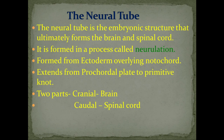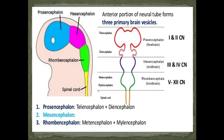The next topic is the neural tube. The neural tube is the embryonic structure that forms the brain and spinal cord, and the process by which it is formed is known as neurulation. It is formed from ectoderm and extends from the pro-caudal plate to the primitive knot. The cranial part gives rise to brain — forebrain, midbrain, hindbrain — and the caudal part gives rise to the spinal cord.